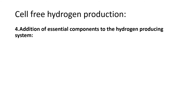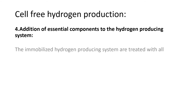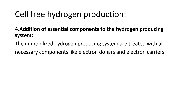The next step is the addition of essential components to the hydrogen producing system. The immobilized system is treated with all necessary compounds like electron donors and electron carriers. Physical and chemical conditions such as temperature, light intensity, pH, and oxygen concentration are adjusted for better growth and higher hydrogen yield.